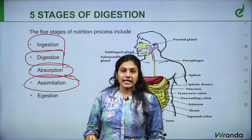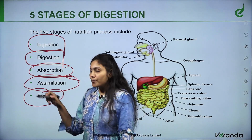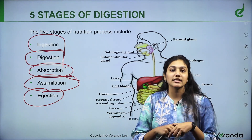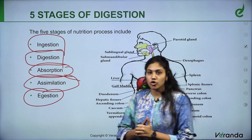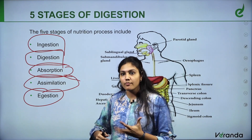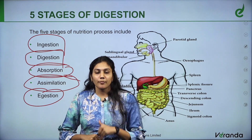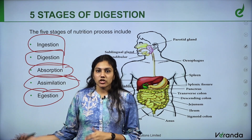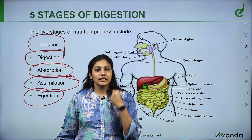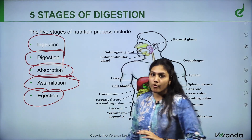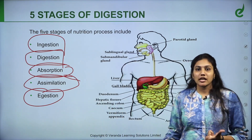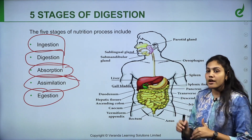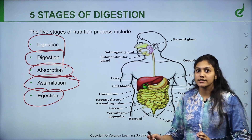Finally, egestion. Now, some of the foods we eat are digested, but not all foods are fully digested. Some foods are not digested. After the large intestine, it will come out — we have defecation. It will get ejected out of our body. And that process is egestion. So these are the major five processes.